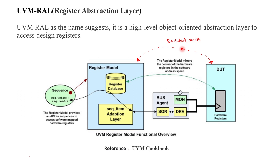In RAL, if our DUT consists of registers and memories, we define a register sequence. This register sequence cannot be driven directly to the driver. With front door access, bus sequences are written and the driver drives those to the DUT. So the register sequence needs to be converted into a bus sequence. With the help of the adapter, the register sequence is converted into a bus sequence, which the driver gets via the sequencer and drives to the DUT.